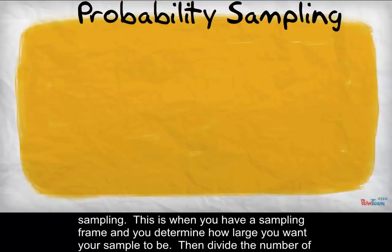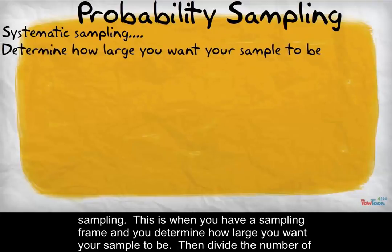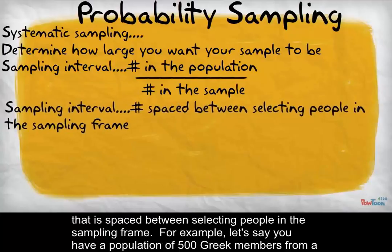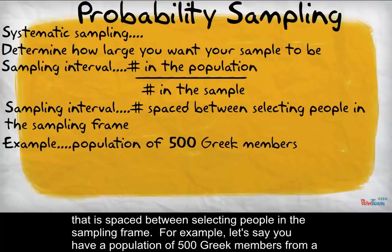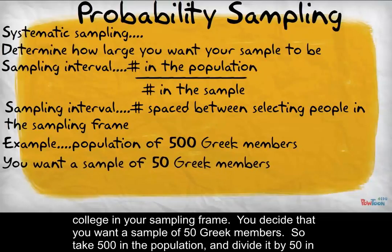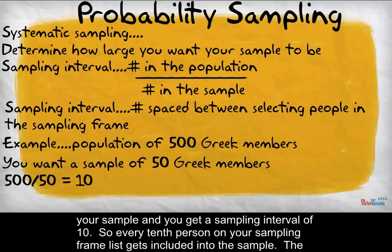The next is systematic sampling. This is when you have a sampling frame and you determine how large you want your sample to be, then divide the number of people in the population by the number of people in the sample — this is called a sampling interval. The sampling interval is the number that is spaced between selecting people in the sampling frame. For example, if you have a population of 500 Greek members and you want a sample of 50, take 500 divided by 50 and you get a sampling interval of 10. So every tenth person on your sampling frame list gets included into the sample.